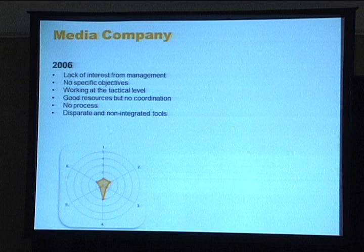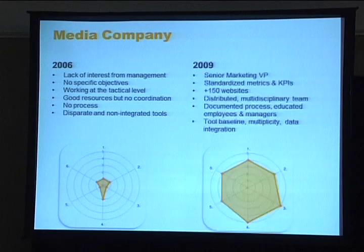Two quick examples. A media company: there are two ways you can use the model. In 2006, they did an assessment and showed very low maturity. Three years later, the assessment showed a very different picture. The major driver was a VP of marketing who came into the business — he already knew about the importance of web analytics and being data-driven, and he made things happen. That was the major shift. The issue is: the guy did such a great job that he got a promotion and moved away, and now they are falling back because they lost their champion.